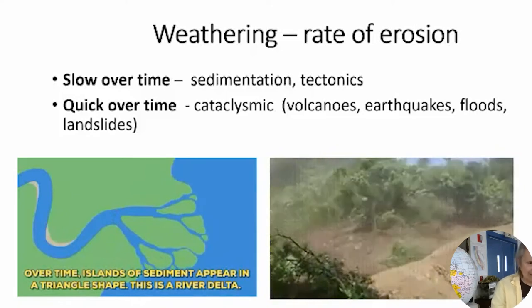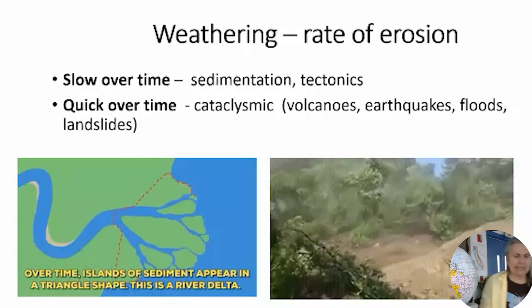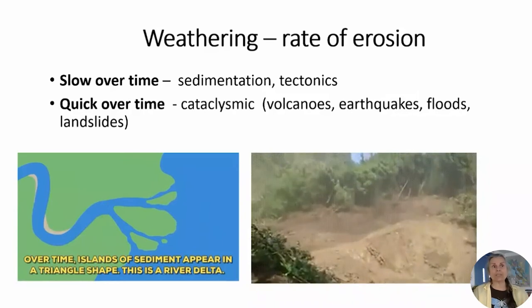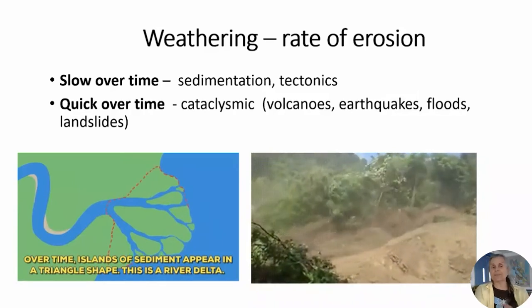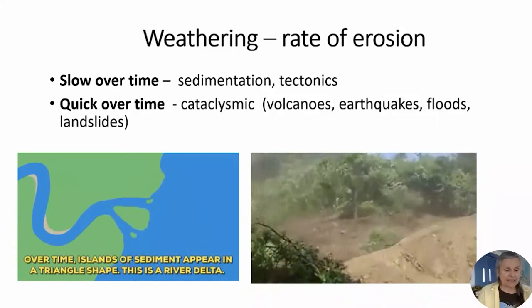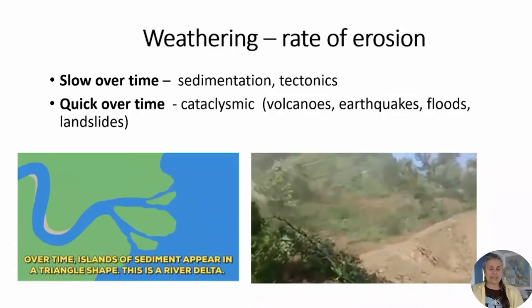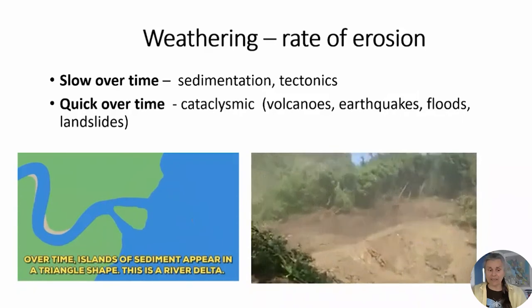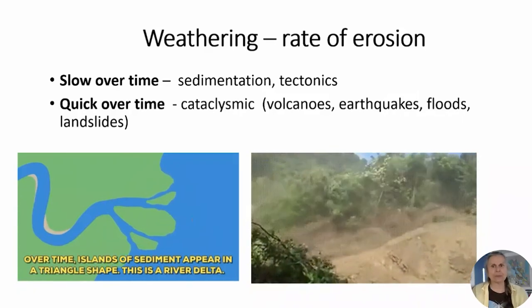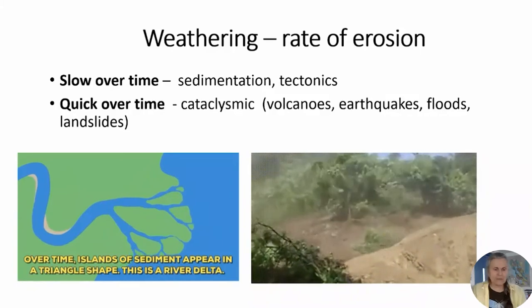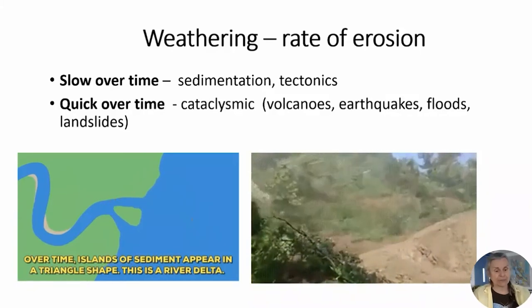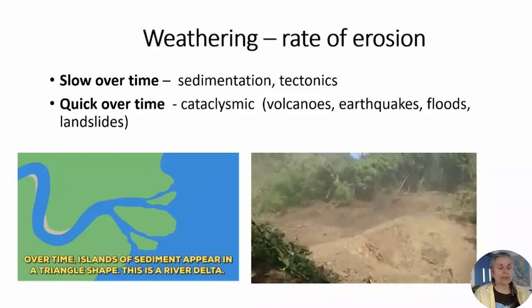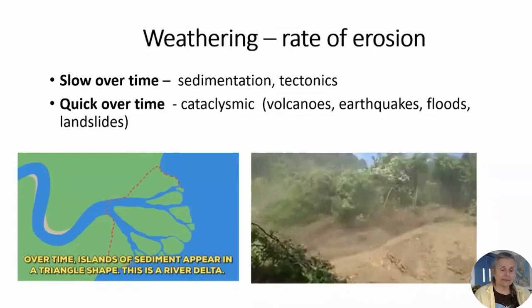Landslides can occur very quickly. Here in the Bay Area, if you go up to Mission Peak and look down, many landslides have occurred over time — taking trees with them. This happens when it rains a lot and the soil gets super saturated with water, then comes down quickly creating large landslides. Quick erosion events also include volcanoes, earthquakes, floods, and landslides.